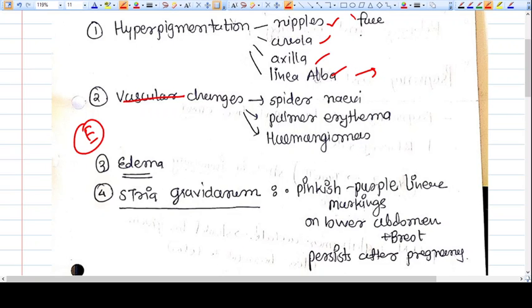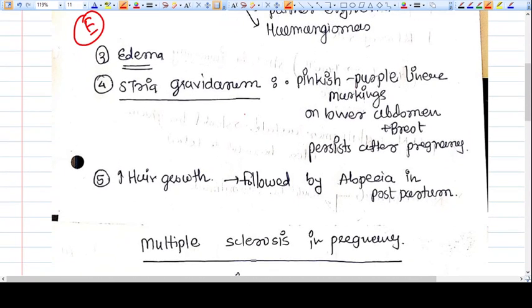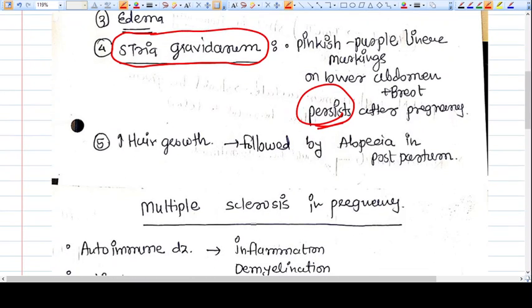Generalized edema is there. Now what is stria gravidarum? This is a very normal phenomenon. The pinkish purple linear markings over the lower abdomen and breast. They persist after pregnancy.